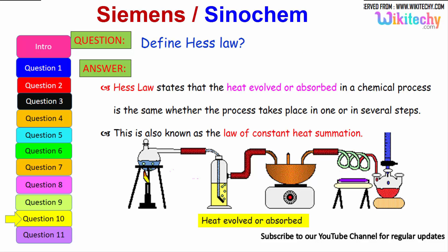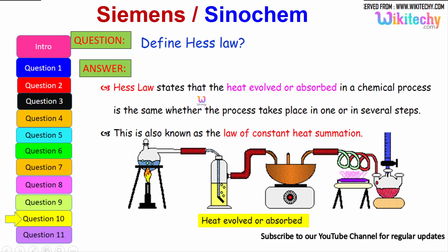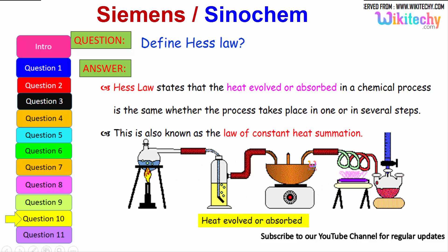Define Hess's Law. This is a very important question. In the context of heat generated between objects and emissions, this law states that the heat evolved or absorbed in a chemical process is the same whether the process takes place in one step or in several steps. This is also known as the law of constant heat summation.